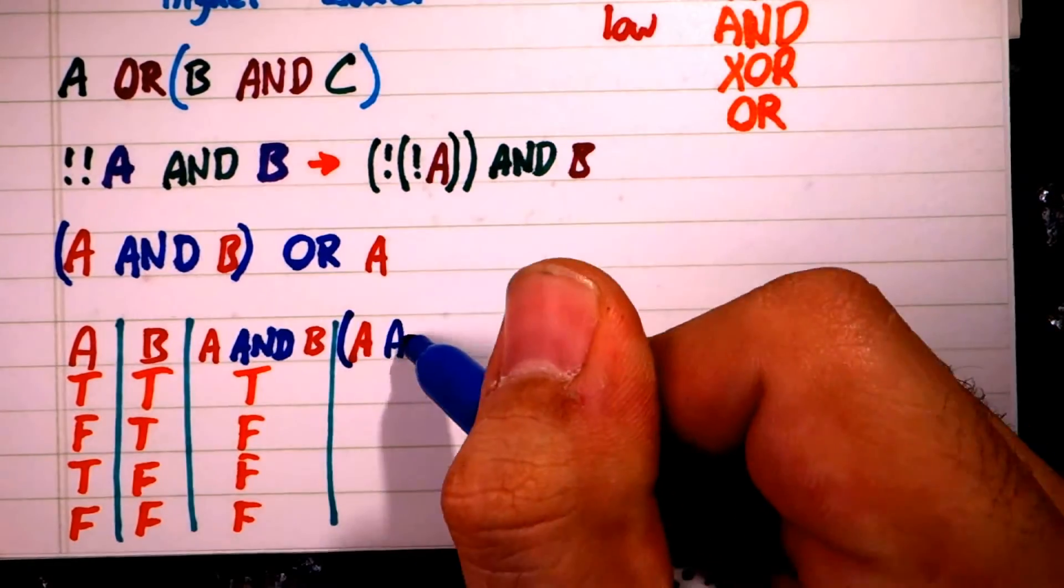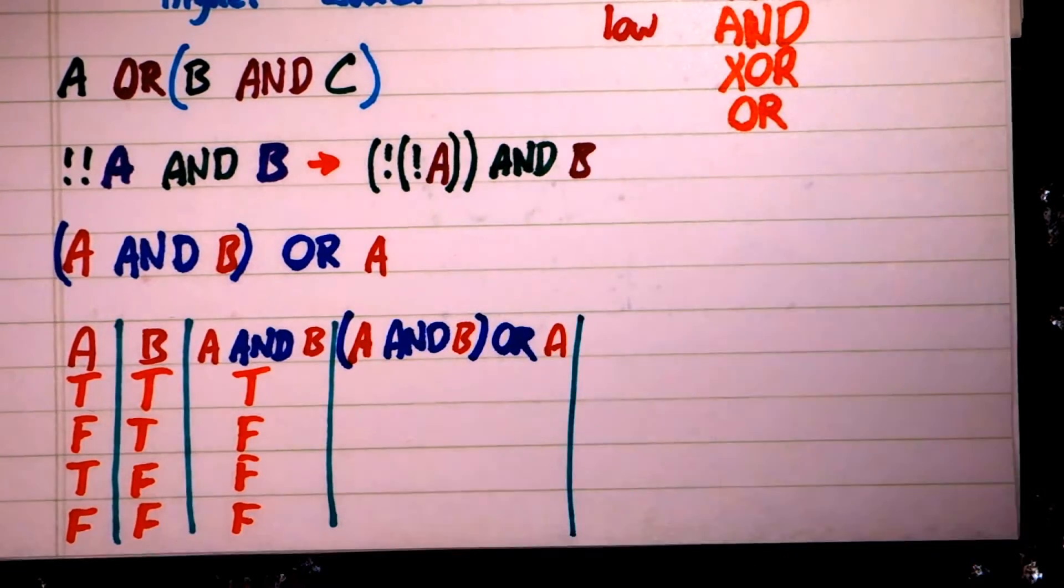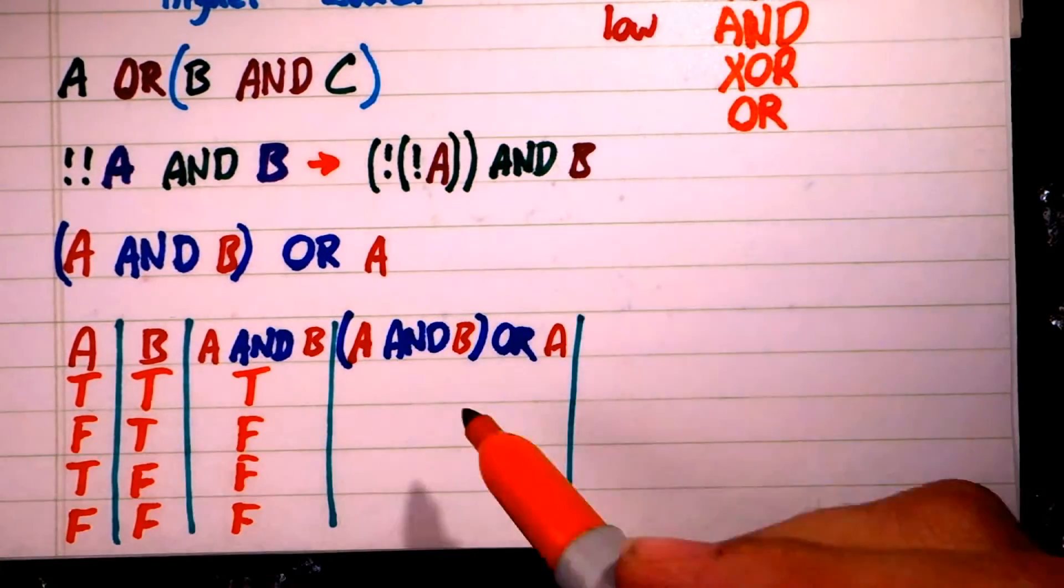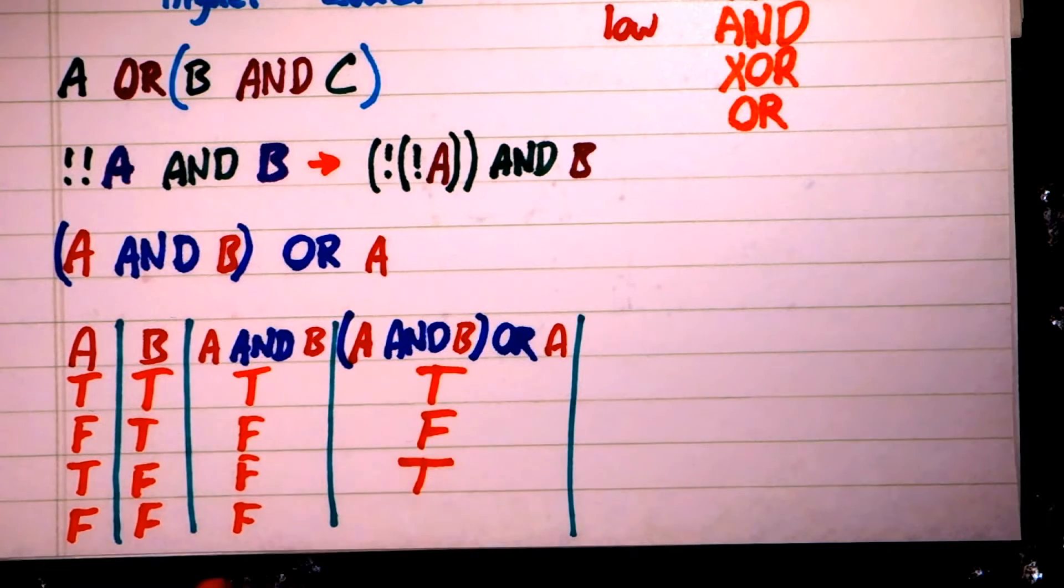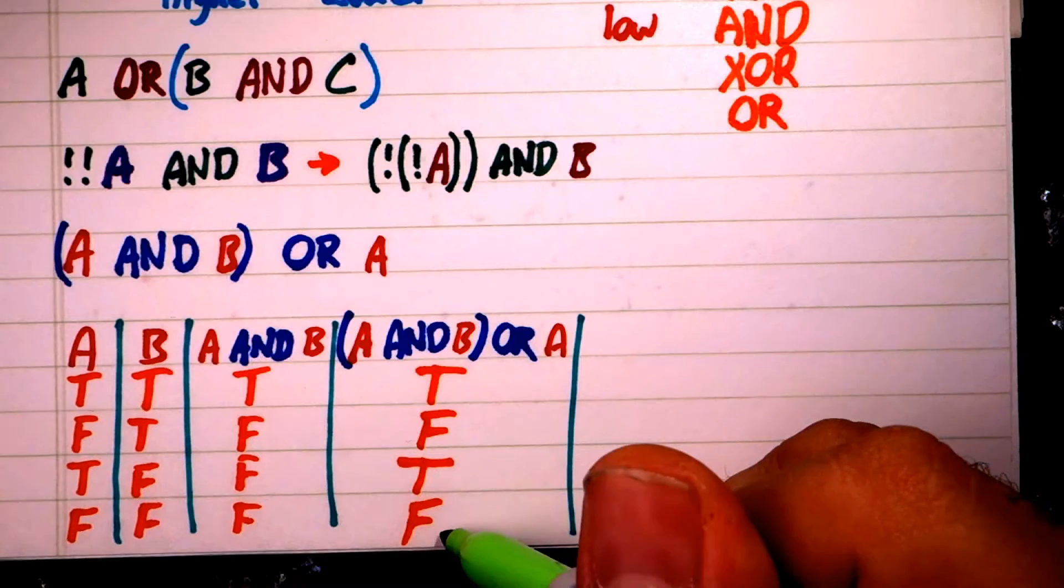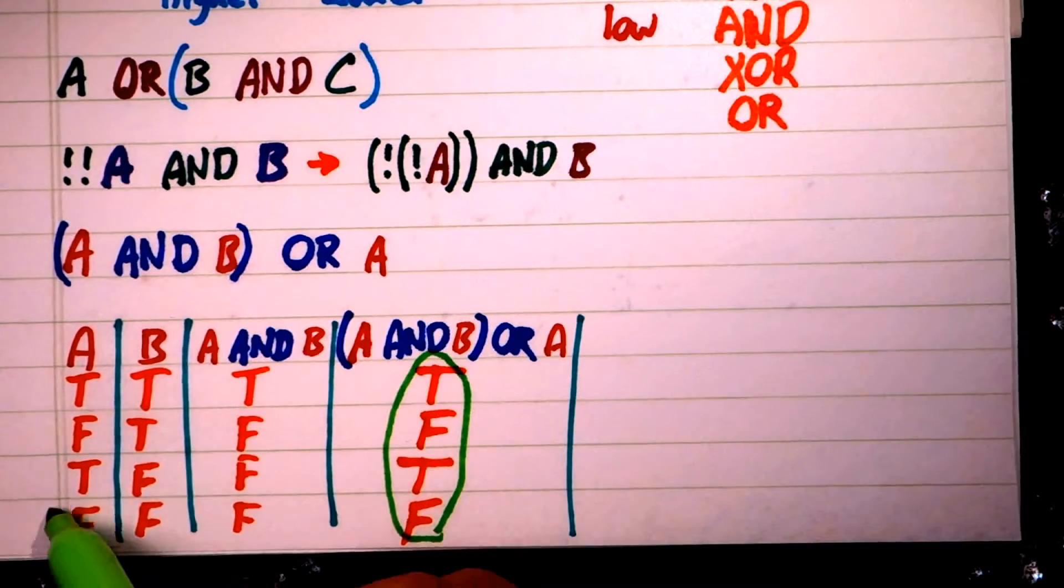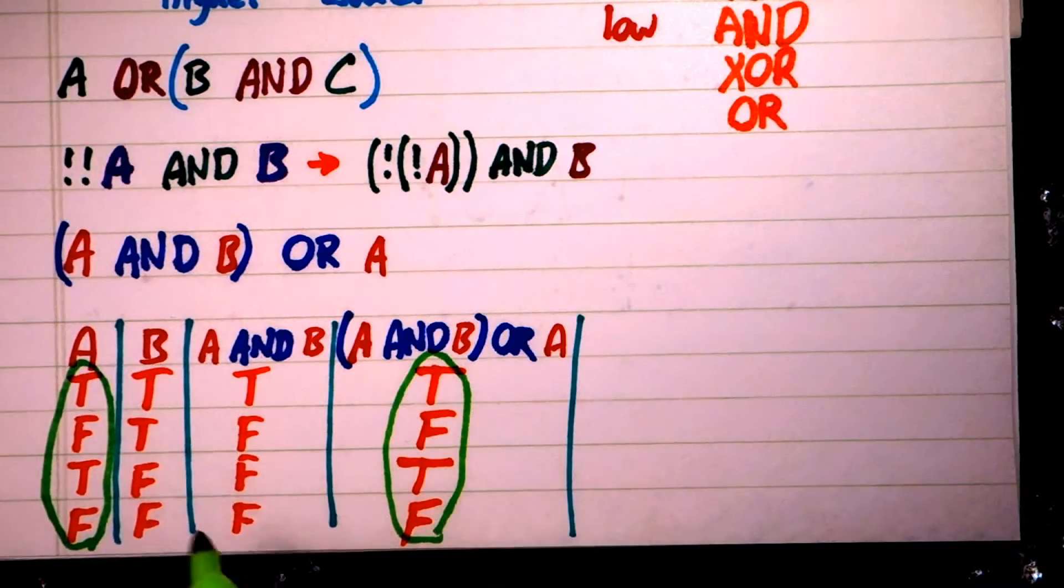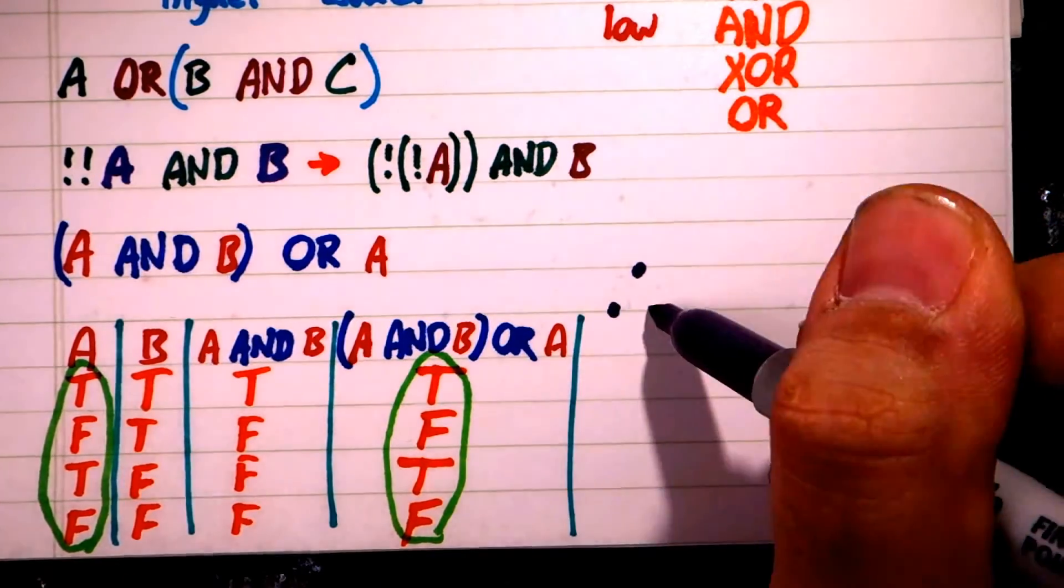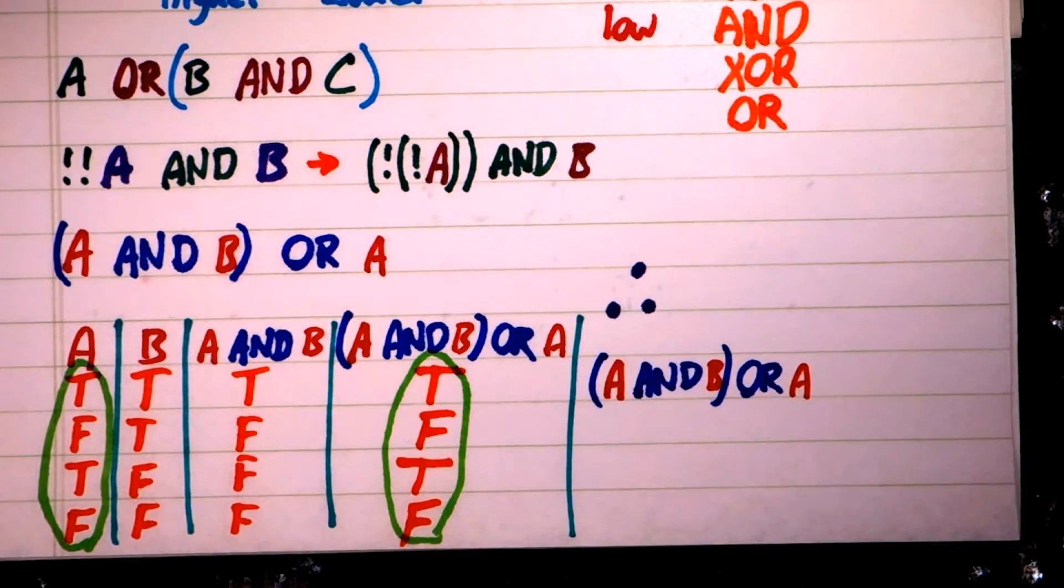Next, we take that result and compute the OR with A. Very quickly, we can see the exact states that the original composite represented. Notice that the value of the expression A AND B OR A are identical to the values of A itself. This means that A AND B OR A is logically equivalent to just A.